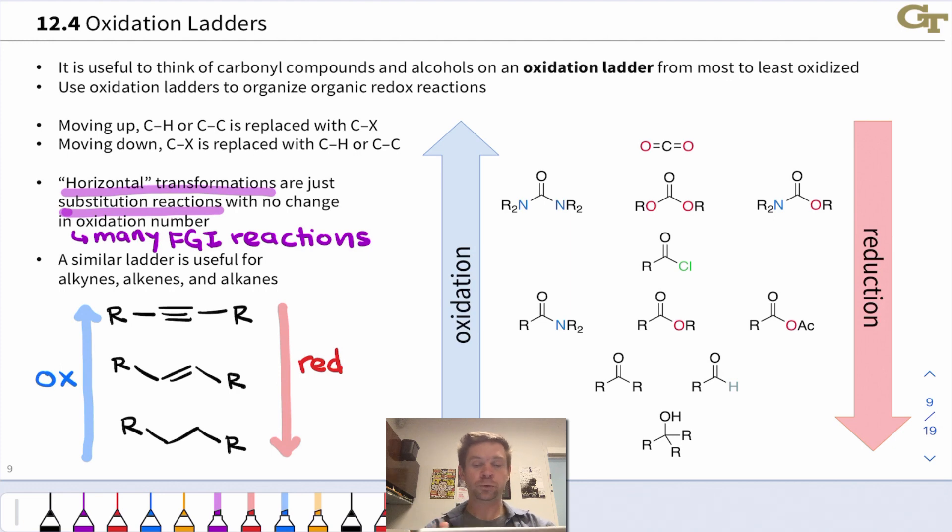So we'll see reactions that interconvert these functional groups, and it's useful to think of them as involving moving up or down on the oxidation ladder of carbonyl compounds. Of course, we can also move horizontally on the oxidation ladder, and those correspond to just substitution reactions where we're not changing the oxidation level of the functional group, but we are changing the nature of the functional group, going, for example, from an ester to an amide. There's no change in oxidation level, but there is a change in the nature of the functional group. And we'll refer to that as functional group interchange, or FGI, when it shows up in synthesis.